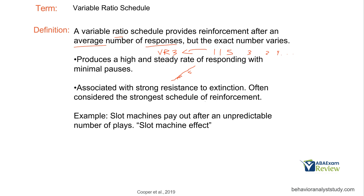Variable ratio schedules are associated with strong resistance to extinction and are often considered the strongest schedule of reinforcement. It's harder to put behavior on extinction because you can't simply say 'after two responses the behavior is on extinction' — at one point we were reinforcing after five responses. Keep that in mind when thinking about how you'll use extinction with a variable ratio schedule, because it's going to be more difficult to implement.